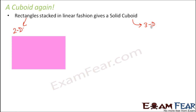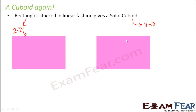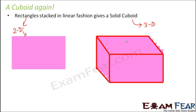If you stack rectangles one after another — this is our two-dimensional rectangle — we will build a three-dimensional cuboid from it. You place one rectangle, just imagine a sheet of paper cut in the shape of a rectangle, and you keep placing more and more rectangles. What do you end up getting? You end up getting a solid cuboid.